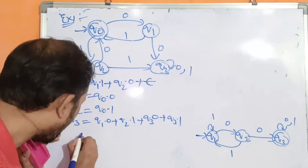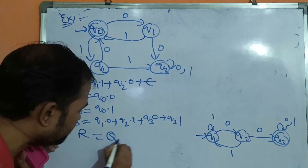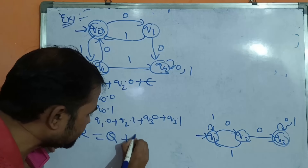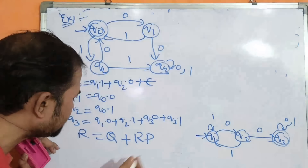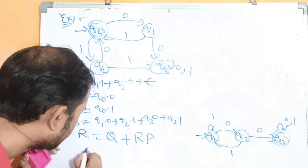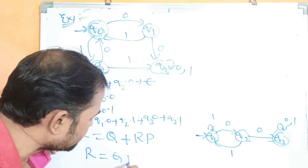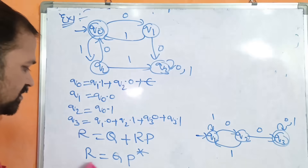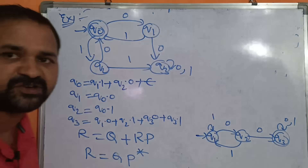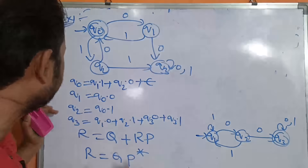Arden's theorem states: if a regular expression is in the form R = Q + R·P, then it can be rewritten as R = Q·P*. This is Arden's algorithm.